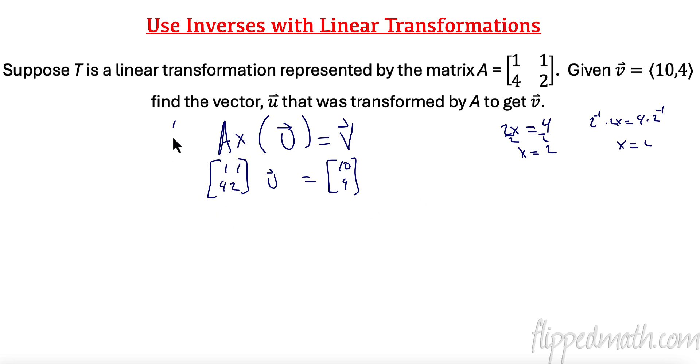So I'm going to multiply this side by the inverse, and this side by the inverse. Now the trick here is, we have to keep our order of operations such that our matrices work. So we're going to have to do the inverse of matrix A times our vector V, because that's a 2 by 2 and a 2 by 1.